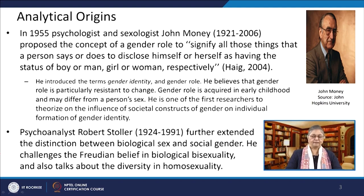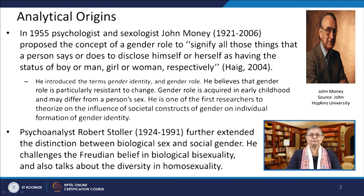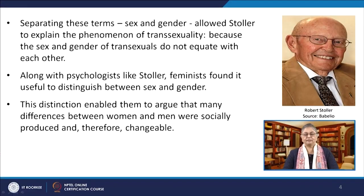Money is one of the first researchers to theorize on the influence of societal constructs of gender on individual formation of gender identity. Robert Stoller further extended the distinction between biological sex and social gender. He challenges the Freudian belief in biological bisexuality and talks about diversity within homosexuality. In order to explain why some people felt trapped in the wrong bodies, Stoller in the mid-1960s began using the terms sex and gender — sex to pick out biological traits, and gender to pick out the amount of femininity and masculinity a person exhibited.